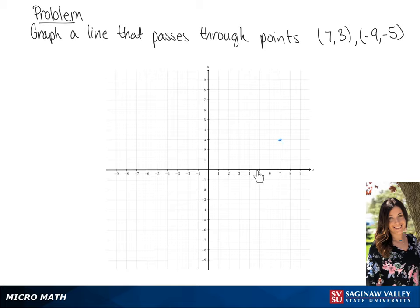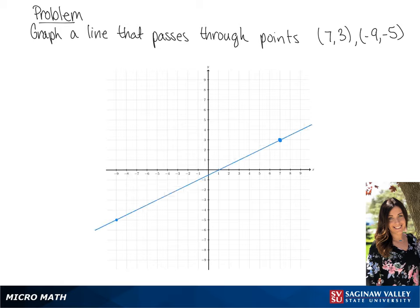We're going to graph (7, 3), so we're going to go right 7 and up 3. Now we're going to graph (negative 9, negative 5), so we're going to go left 9 and down 5. And then we're going to draw a line that passes through both of these points.